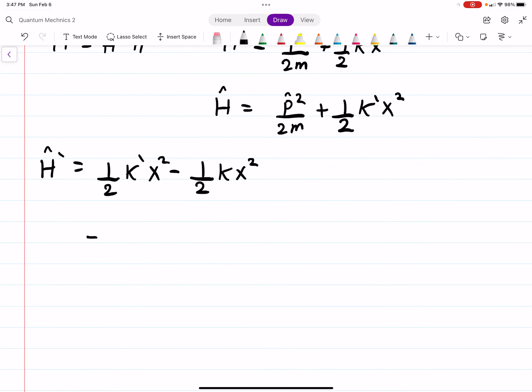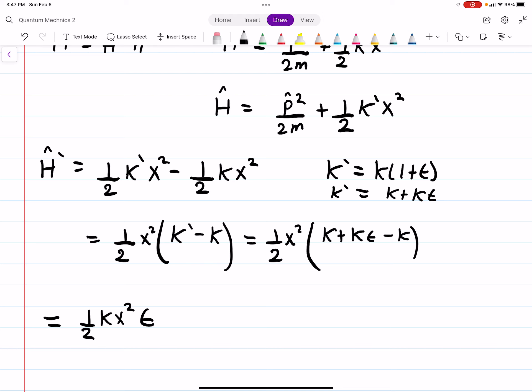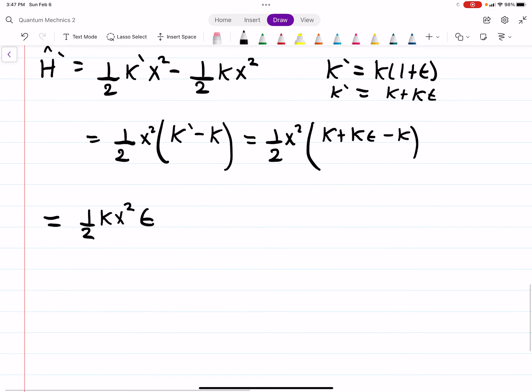So (1/2)k'x² - (1/2)kx² = (1/2)x²(k' - k). Since k' = k(1+ε) = k + kε, we get k' - k = kε. So H' = (1/2)kx²ε. And hopefully you notice that this is just our potential V, so H' = Vε.